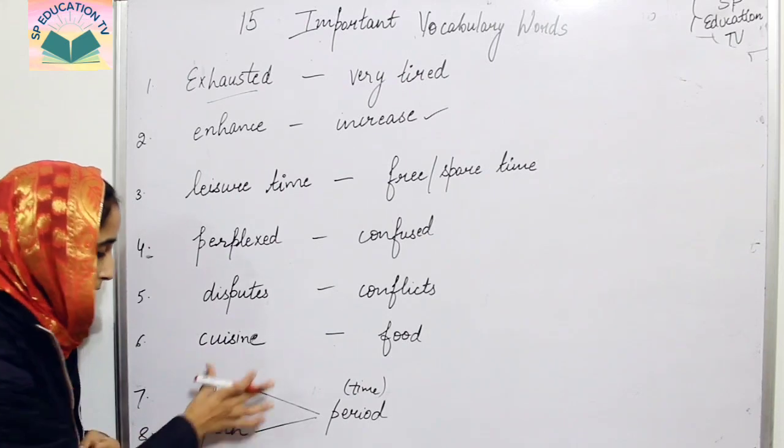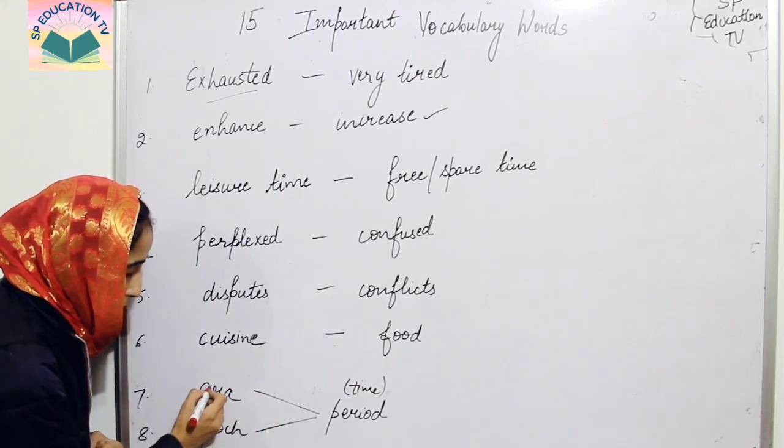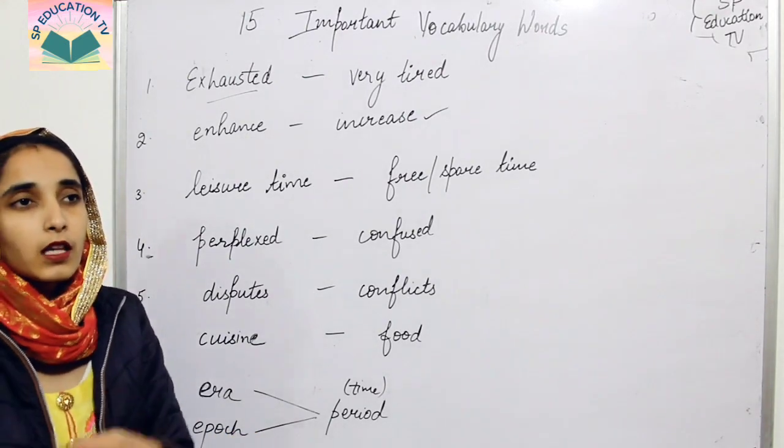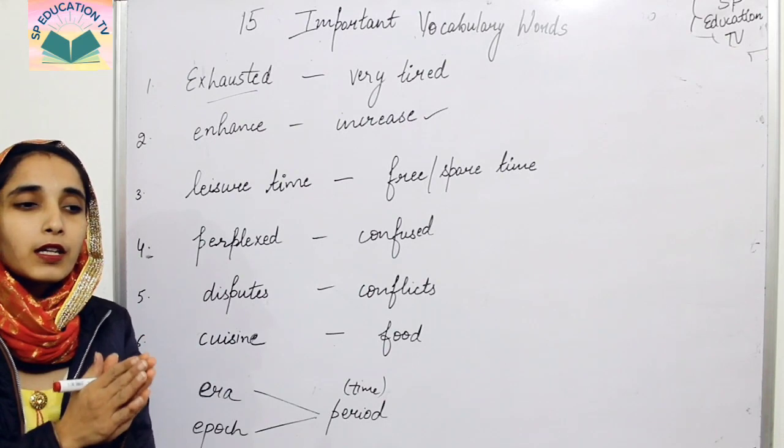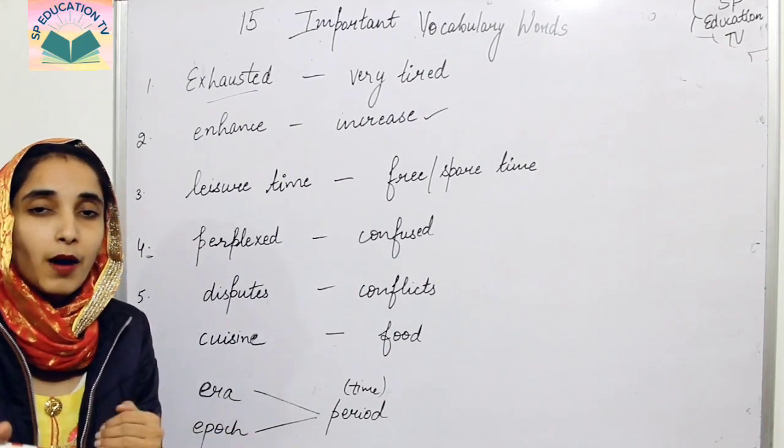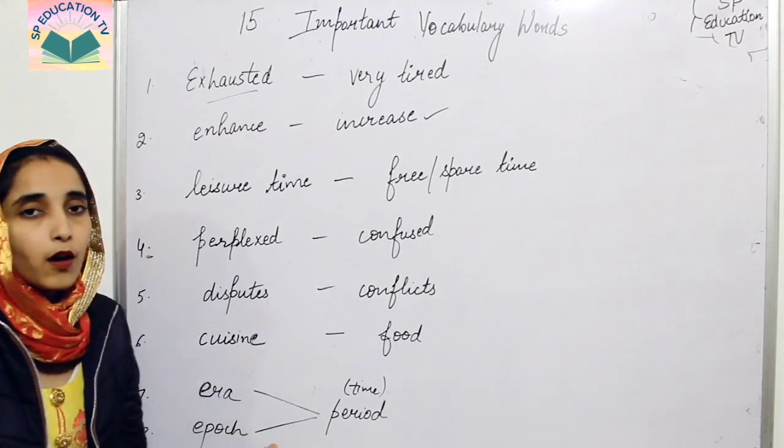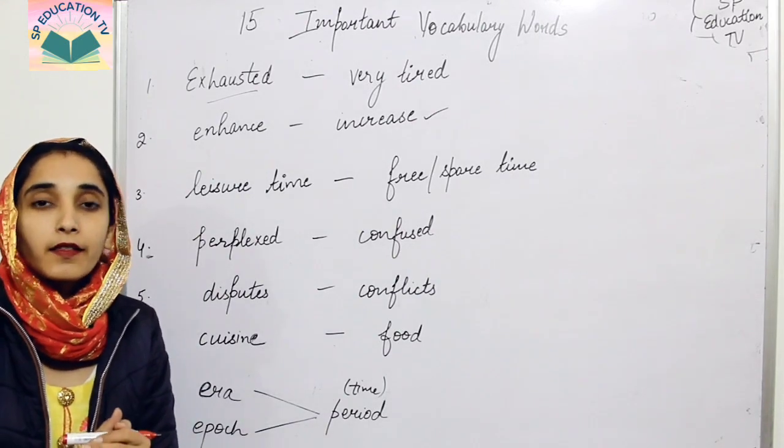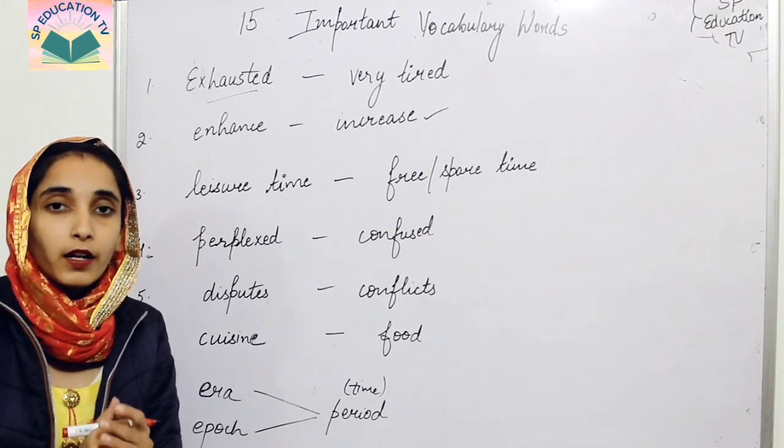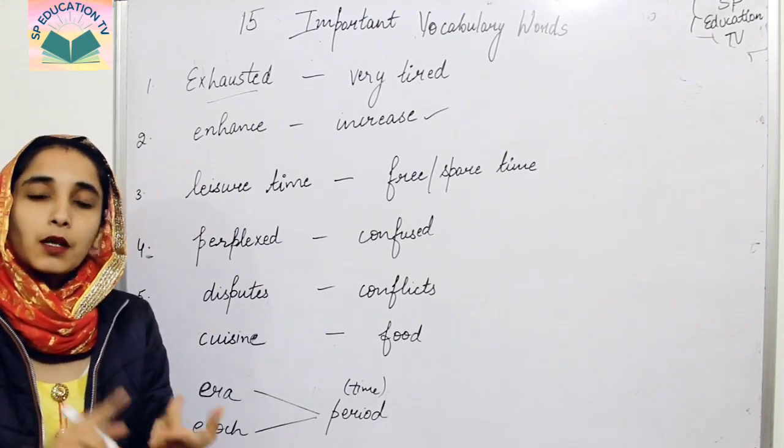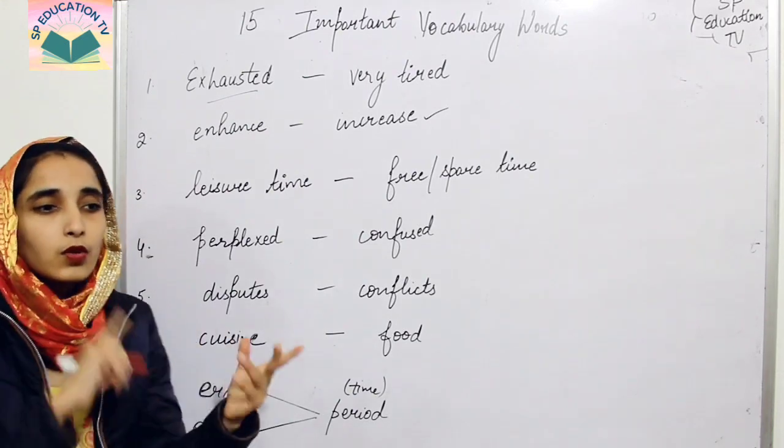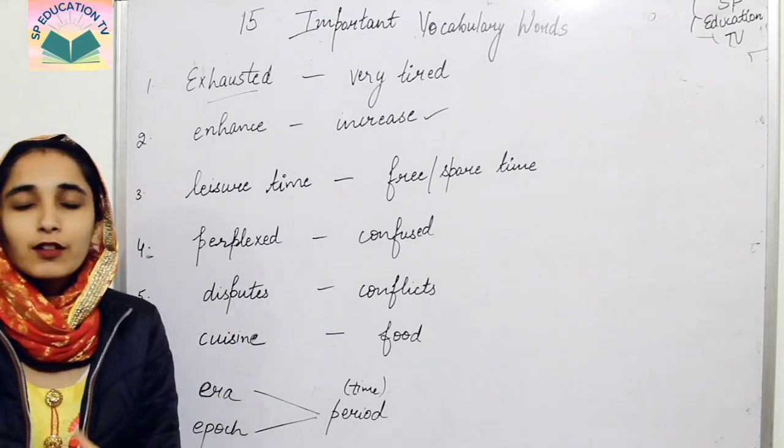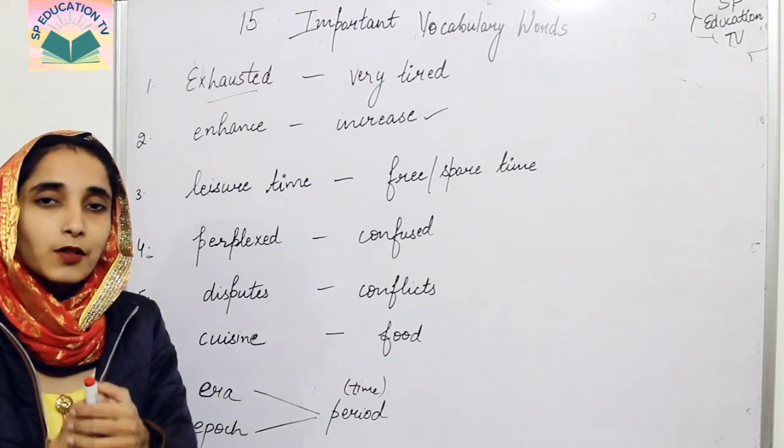Then era. The word era and epoch, these are two words to use for time period. If we say that in this modern world, in this contemporary era or in this contemporary epoch, contemporary means modern world. In this modern era or epoch, these words you can use.